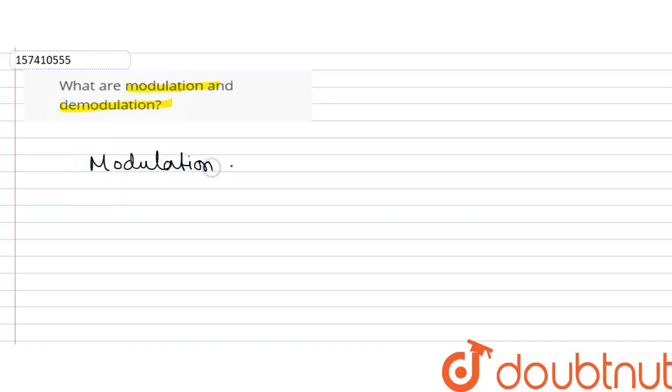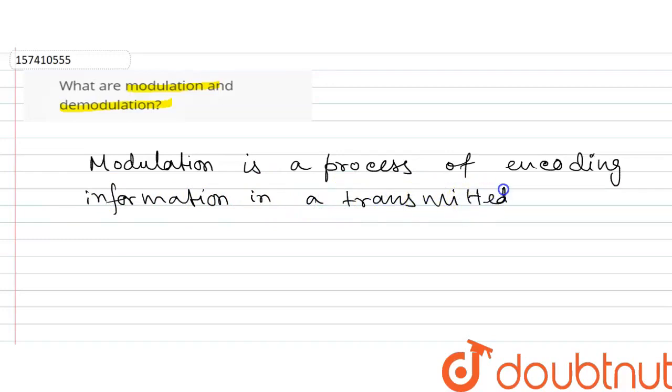Modulation is the process of encoding information. The information can be encoded in a transmitted signal.